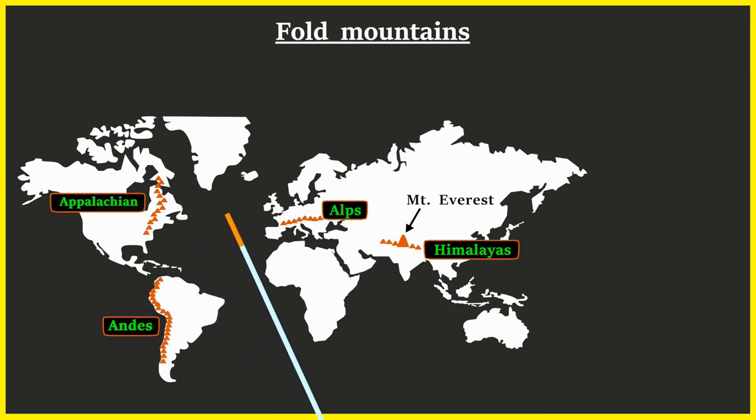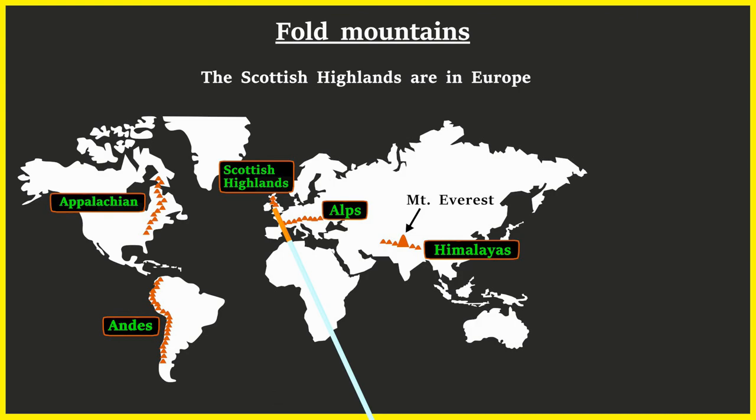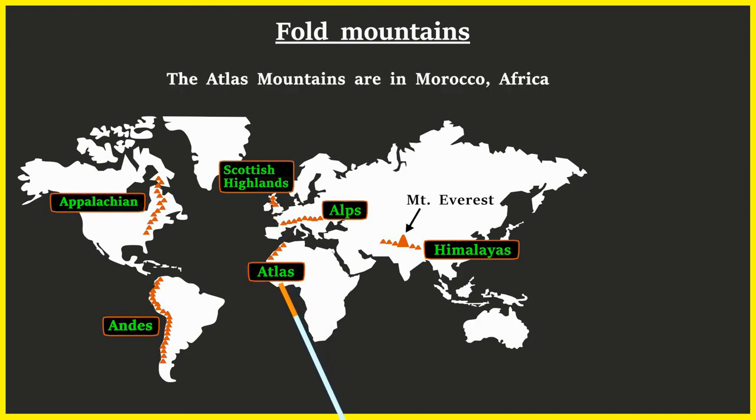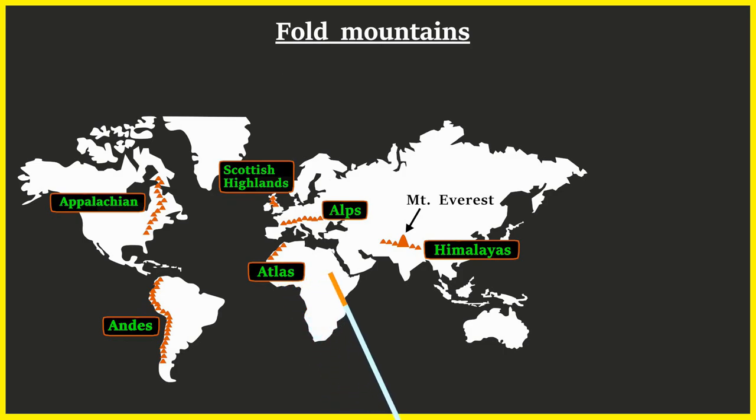The Appalachians are in North America's east coast of Canada and USA. The Scottish Highlands are in Europe, while the Atlas Mountains are in Morocco, Africa.